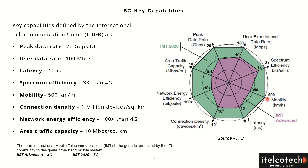For mobility, fast mobile users can be catered for up to 500 kilometers per hour in 5G, compared to 350 kilometers per hour in 4G. The latency in 5G is targeted at one millisecond, which is quite a stringent requirement compared to 10 milliseconds in LTE or 4G. For connection density, in the case of massive machine-to-machine type communication where millions of devices are connected to the cell side, that is possible in 5G but was not possible in 4G.